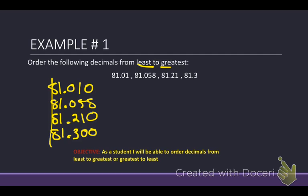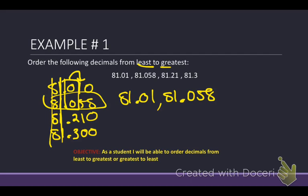So left, all of them are eight. So we move to the next row. All of them are ones. We have a zero, a zero, a two, and a three. Which one is the smallest? Well, we have two zeros that are small. So we need to look at the next one real quick, which is one. So we have 81.01 is the smallest, followed by 81.058, so those both had zeros. And then this one is the next smallest one, which is 81.21, and finally 81.3.